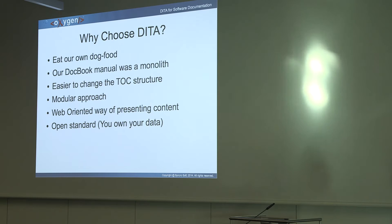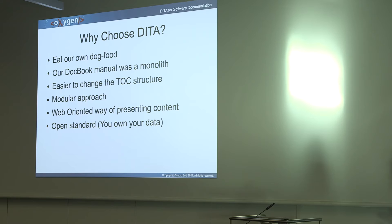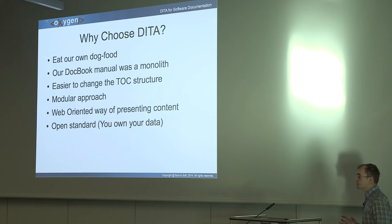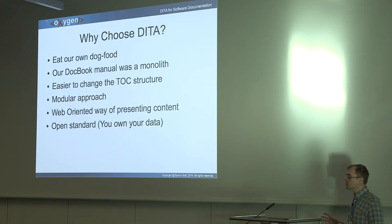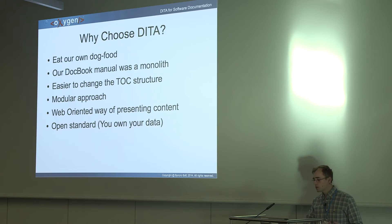We also had some problems with our DocBook manual. It was a monolith — a huge XML document full of DocBook sections. It wasn't very easy to change the table of contents structure when we wanted to reorder content. So we really wanted to give the modular approach a try. Our DocBook manual was mostly structured with the idea that most users use the PDF version, but at some point we realized that PDF contains 1,400 pages. Nobody opens a PDF and searches in it — people want the information available on the web.